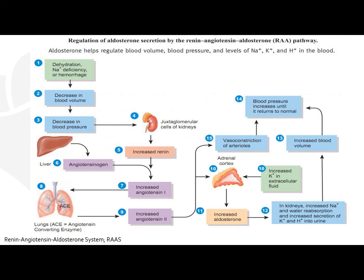RAS is probably the one major mechanism, because it involves a lot of the regulatory components of arterial blood pressure. This is a figure of the RAS. It is a complex endogenous system, and activation and regulation is primarily controlled by the kidney.